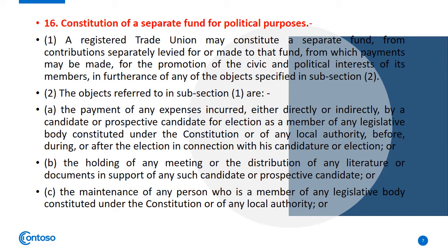Section 16 is about the constitution of a separate fund for political purposes. A registered trade union may constitute a separate fund, from contributions separately levied for that purpose, for which payments may be made for the promotion of the civic and political interests of its members. If any member has civic and political interests, the union can generate a fund for those political purposes, with objectives specified in Section 16.